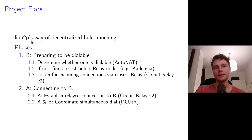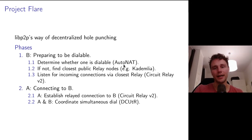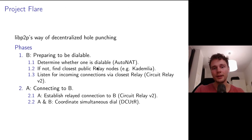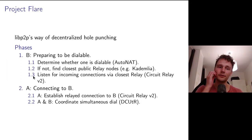You can visualize Project Flare in two phases. In the first phase, in the scenario where A ultimately wants to connect to B, first B has to figure out whether it's actually dialable or not. In the ICE world you would do that with STUN; in the libp2p world you do that with the AutoNAT protocol. Once determined that one is not dialable, one would find some relay nodes that are public. Importantly, these are any public nodes in the network — we don't rely on specific central relay nodes. Then B would listen for incoming connections via those relay nodes. This should remind those familiar with ICE of TURN.